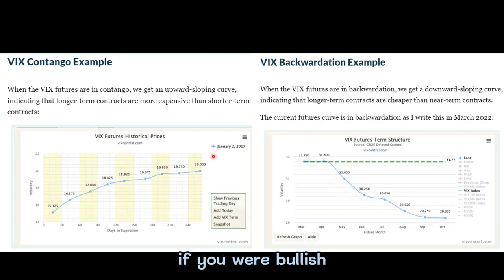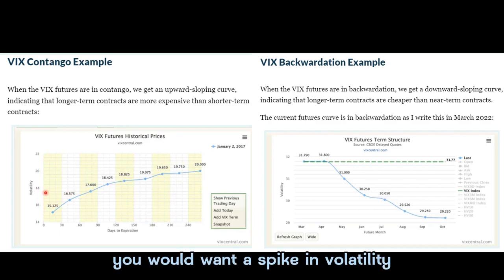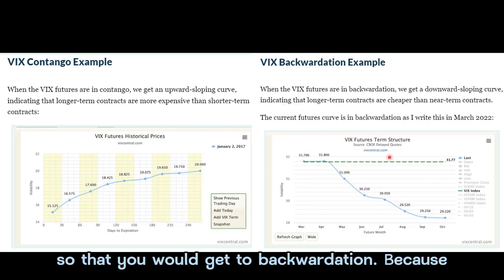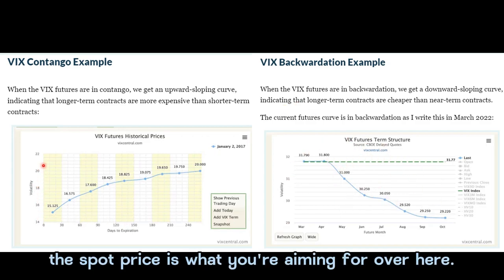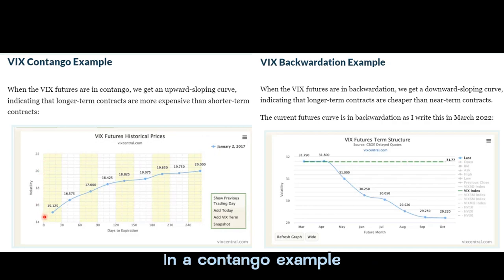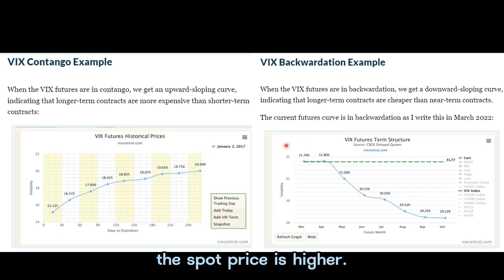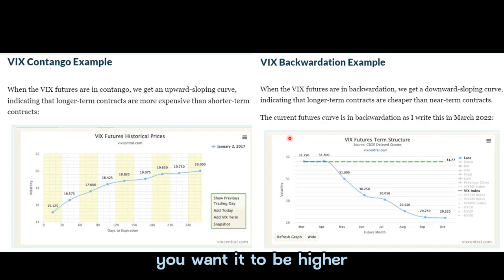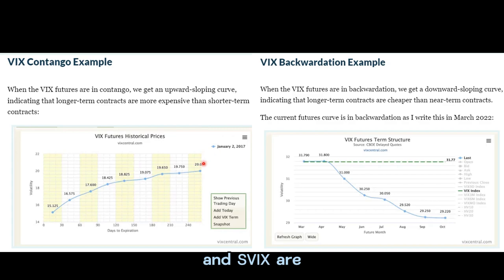In contango, if you were bullish, you would want a spike in volatility for the structure to start to turn up into backwardation, because the spot price is what you're aiming for. In a contango example, the spot price is lower; in the backwardation example, the spot price is higher. If you're bullish, you want it to be higher. And if you're inverse or bearish — which is what ZIVB and SVIX are — then you want it to be lower. So in contango, if you're inverse, you make money.